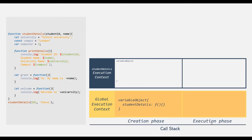During the creation phase, the function code will be scanned for function declarations. And for each function, a property is created in the variable object and it is assigned with the function definition. Similarly, the code is scanned for variable declarations. And for each variable, a property is created in the variable object. It is set to undefined if the variable is created using the var keyword. Otherwise, if the variable is created using let or const keyword, then it will be set to uninitialized.